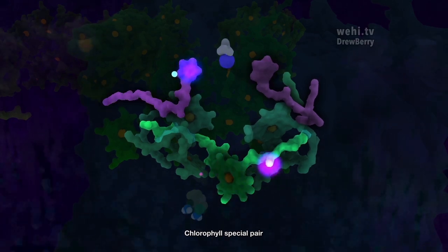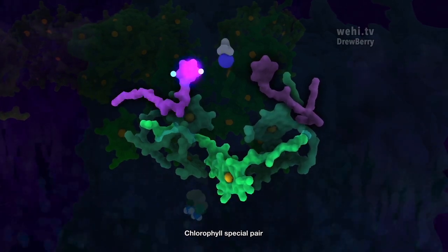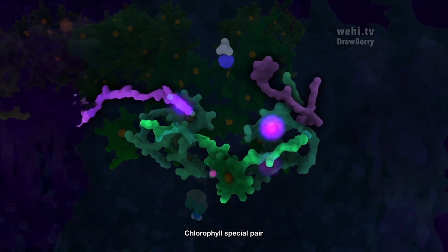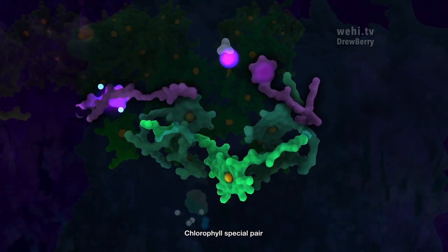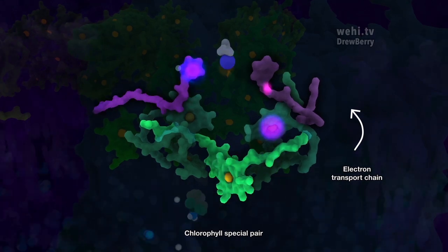The two molecules at the bottom of the reaction center are a chlorophyll special pair. Together they can use the energy from an absorbed photon to energize an electron and release it up through a chain of acceptor molecules.